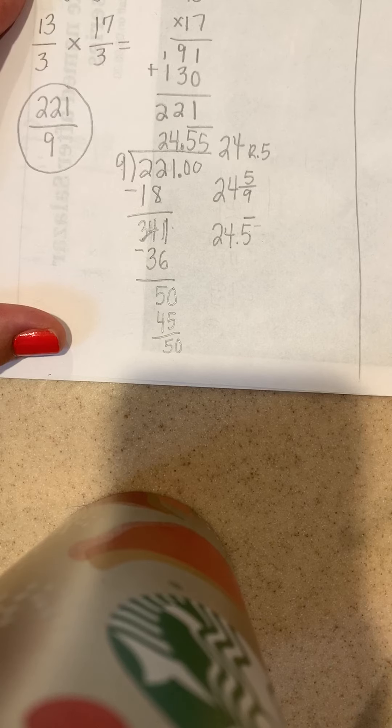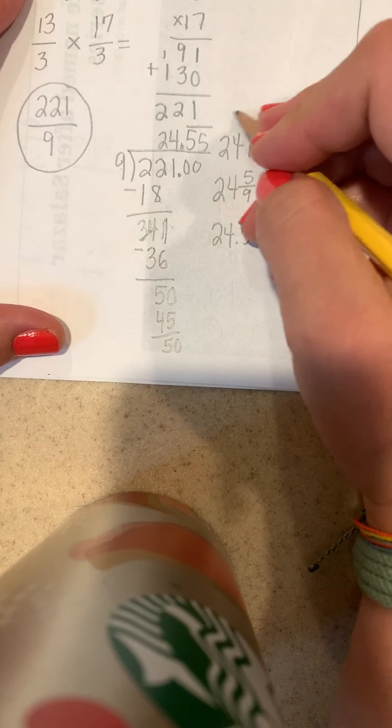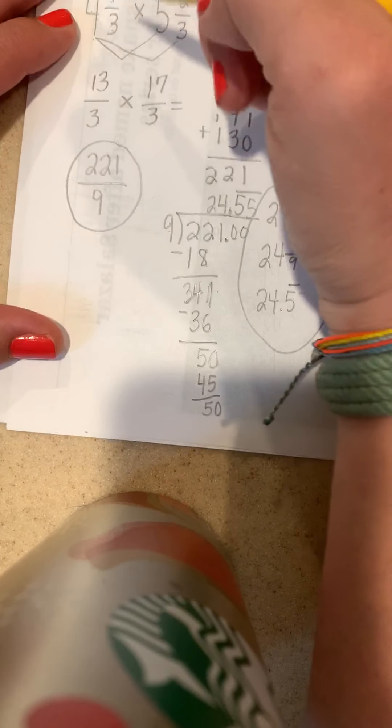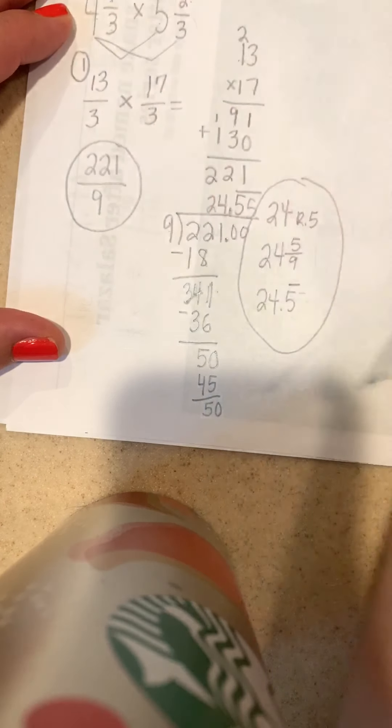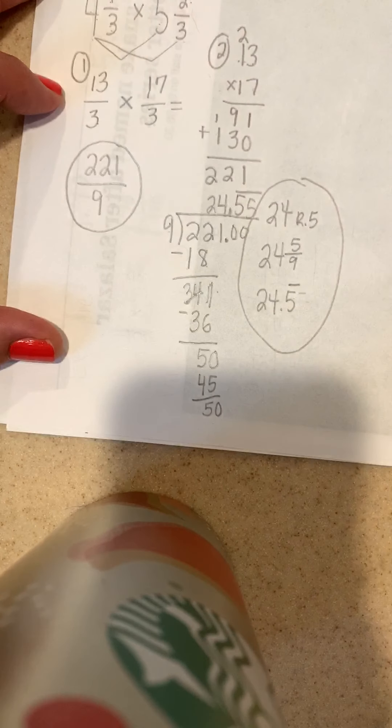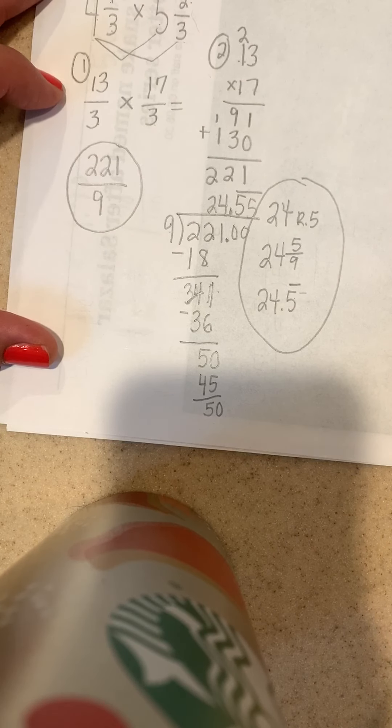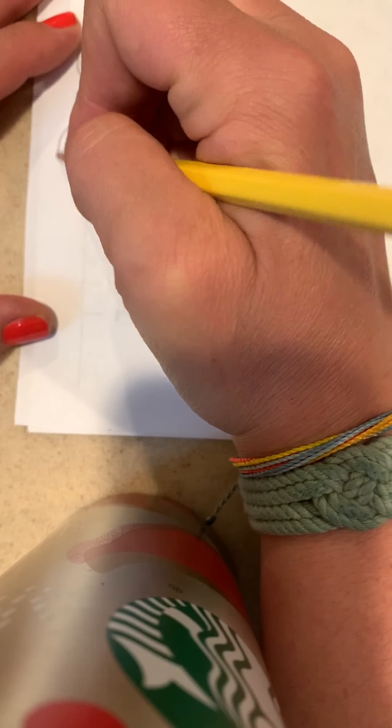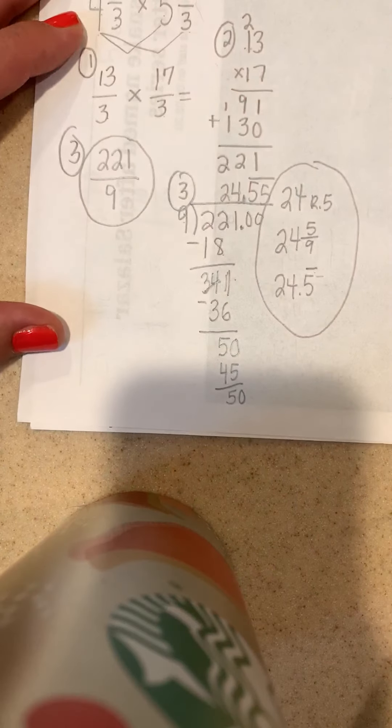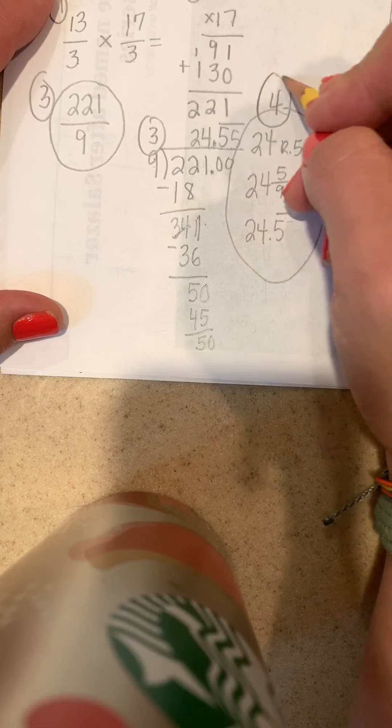That is problem number 1. Three different ways to report the same answer. This problem took one step to change it to improper, two steps to multiply those large numbers that we had to do on the side, three steps to divide, and then our fourth step to report it as an answer.